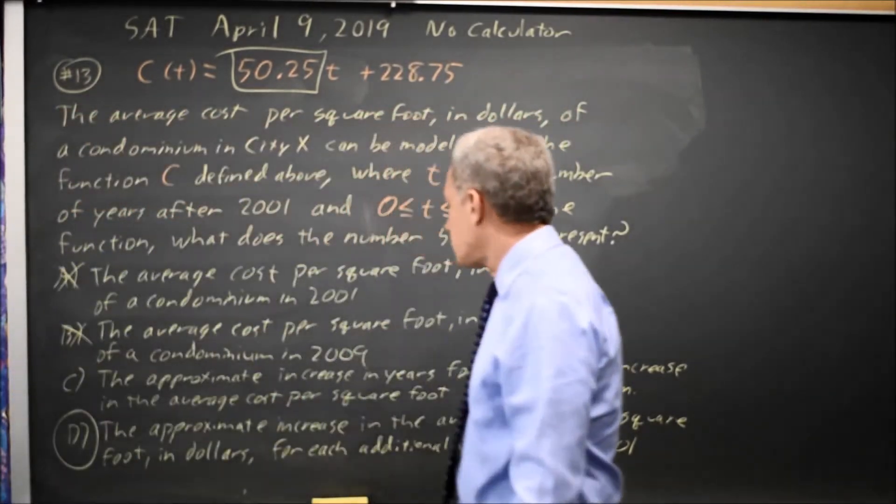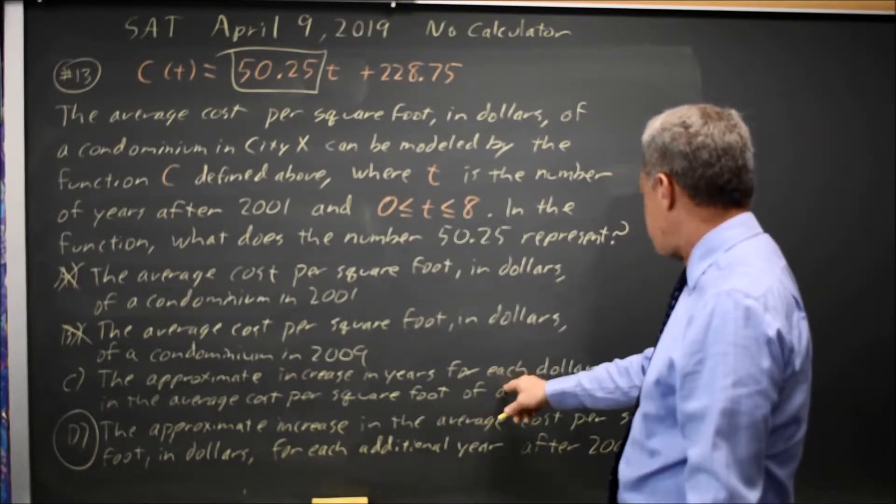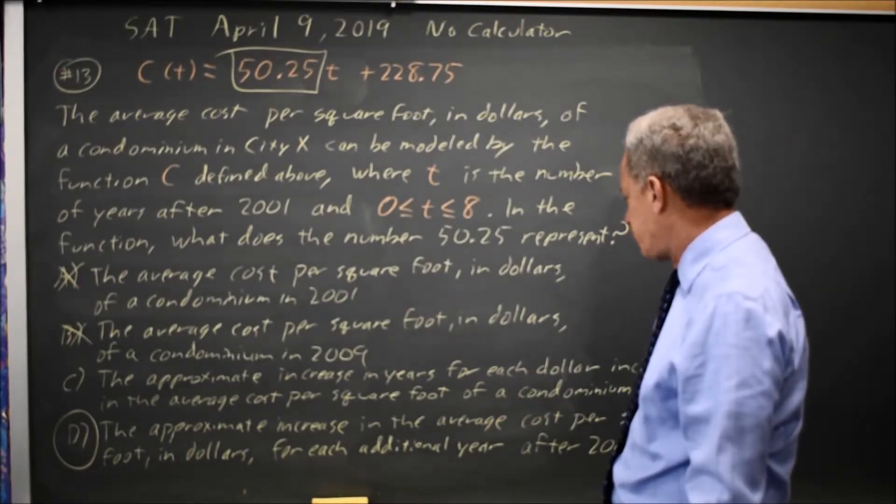And choice C sounds like a slope, but they've swapped the variables. It's the increase in years for each dollar increase in the average cost per square foot.